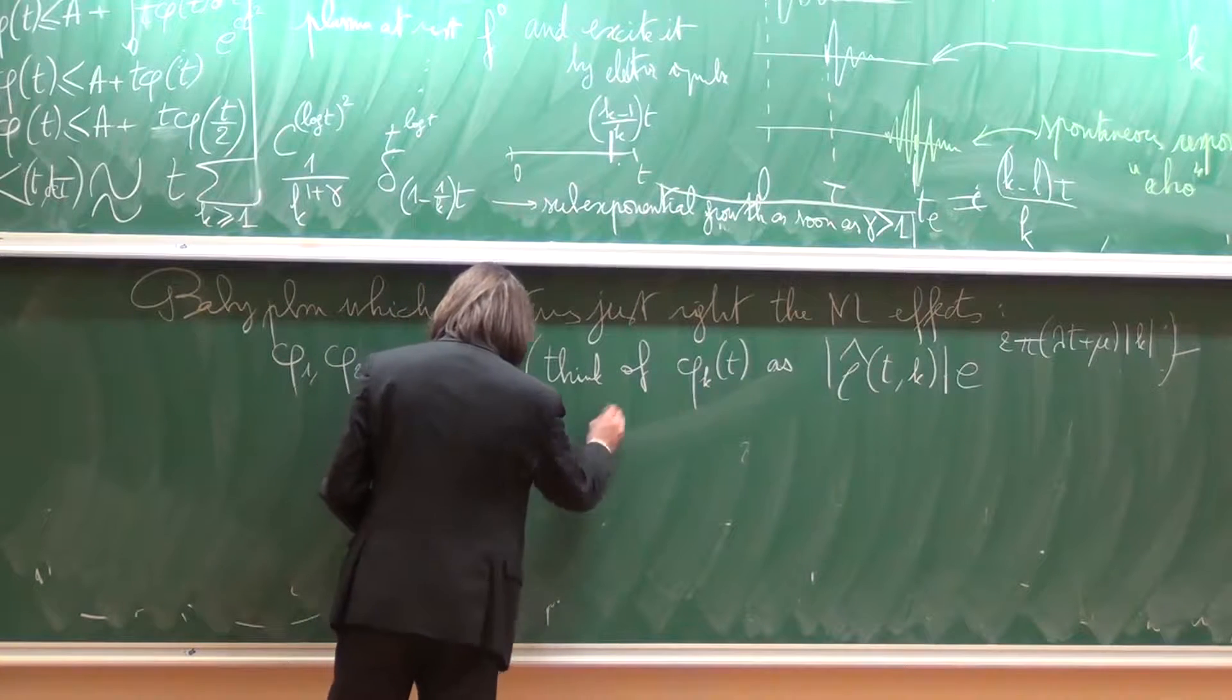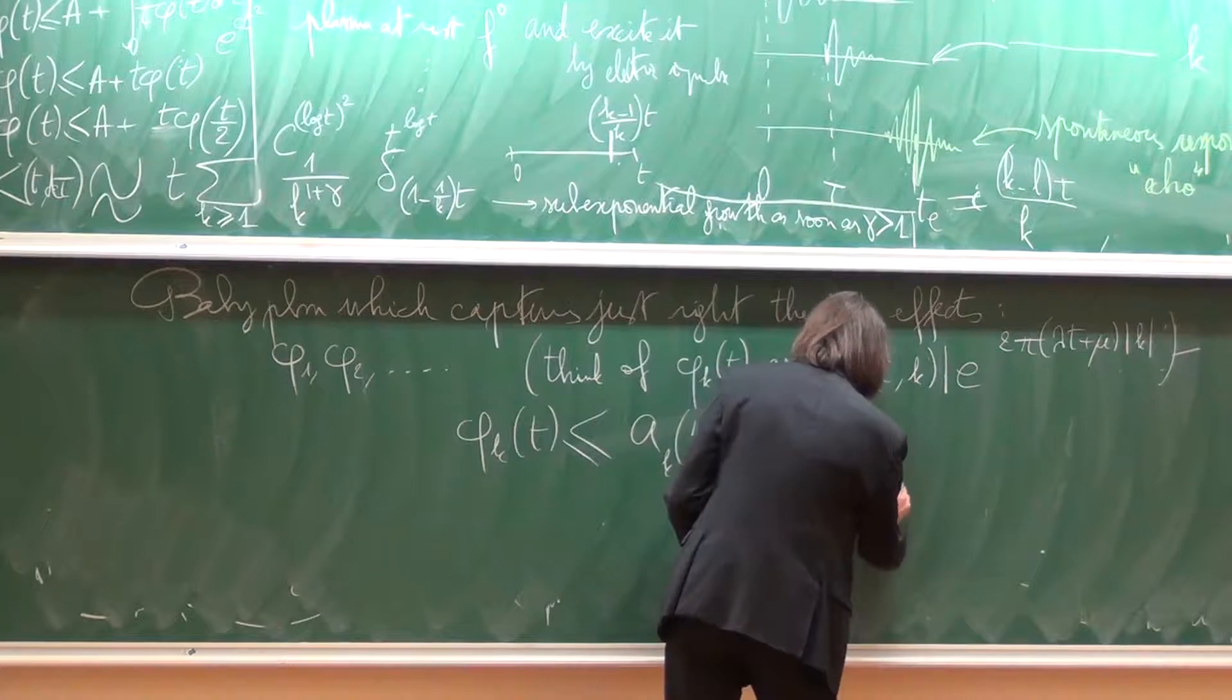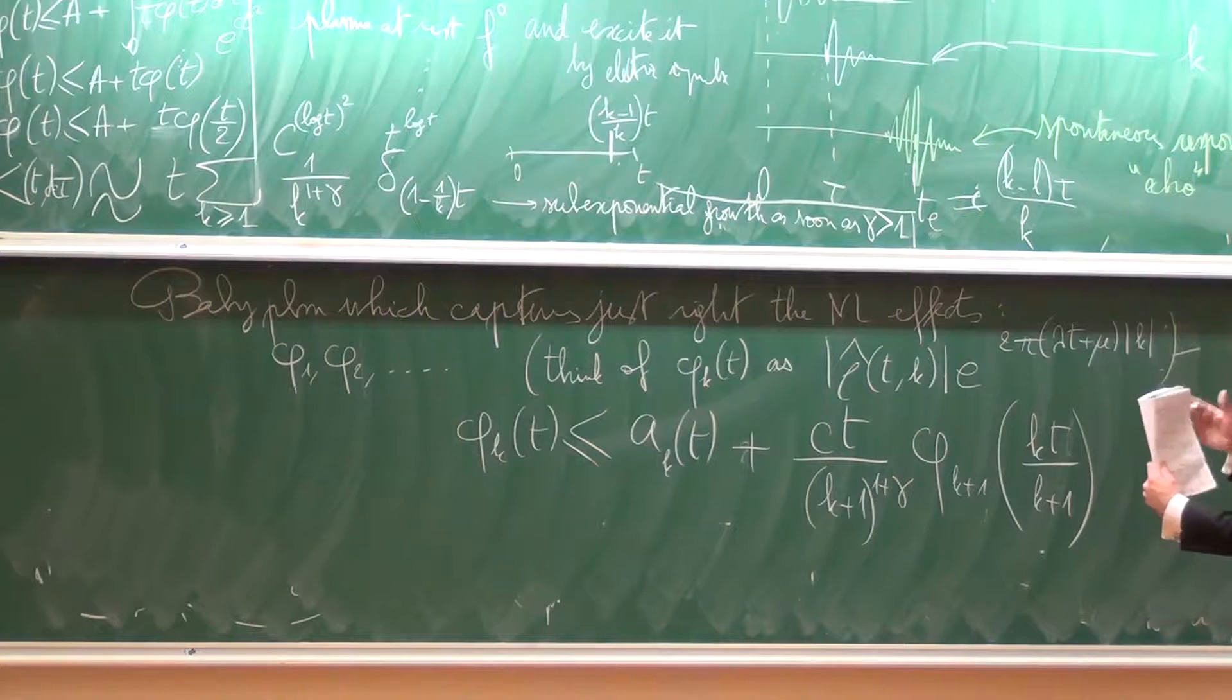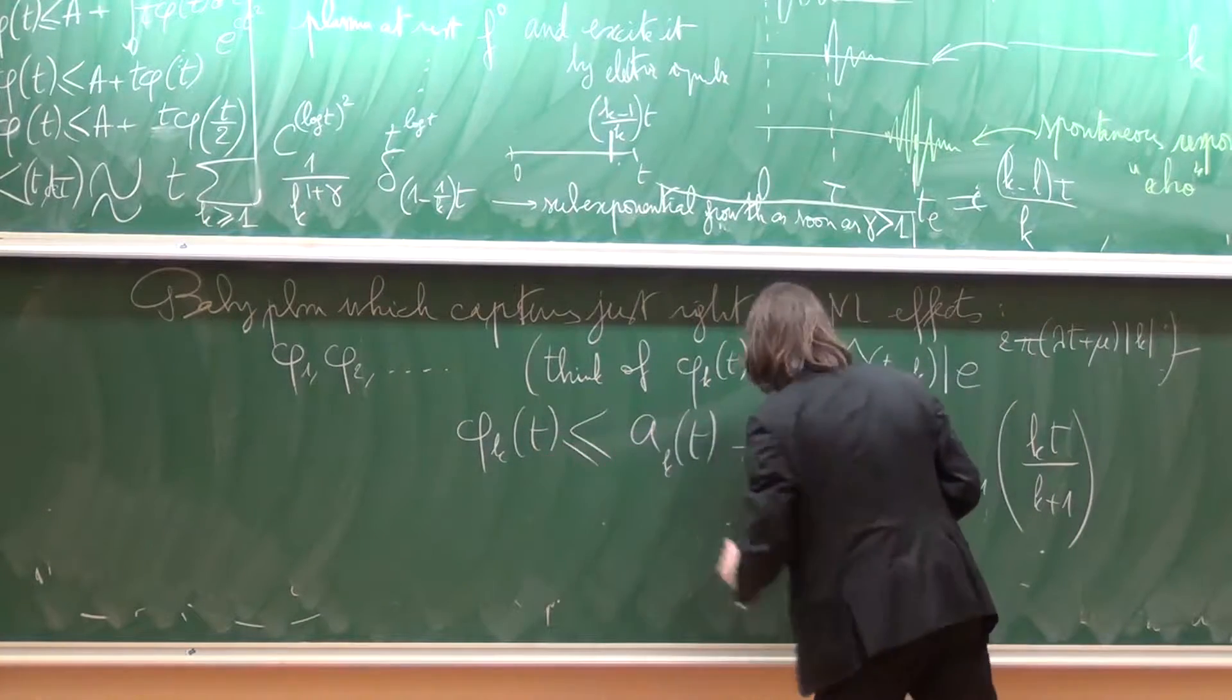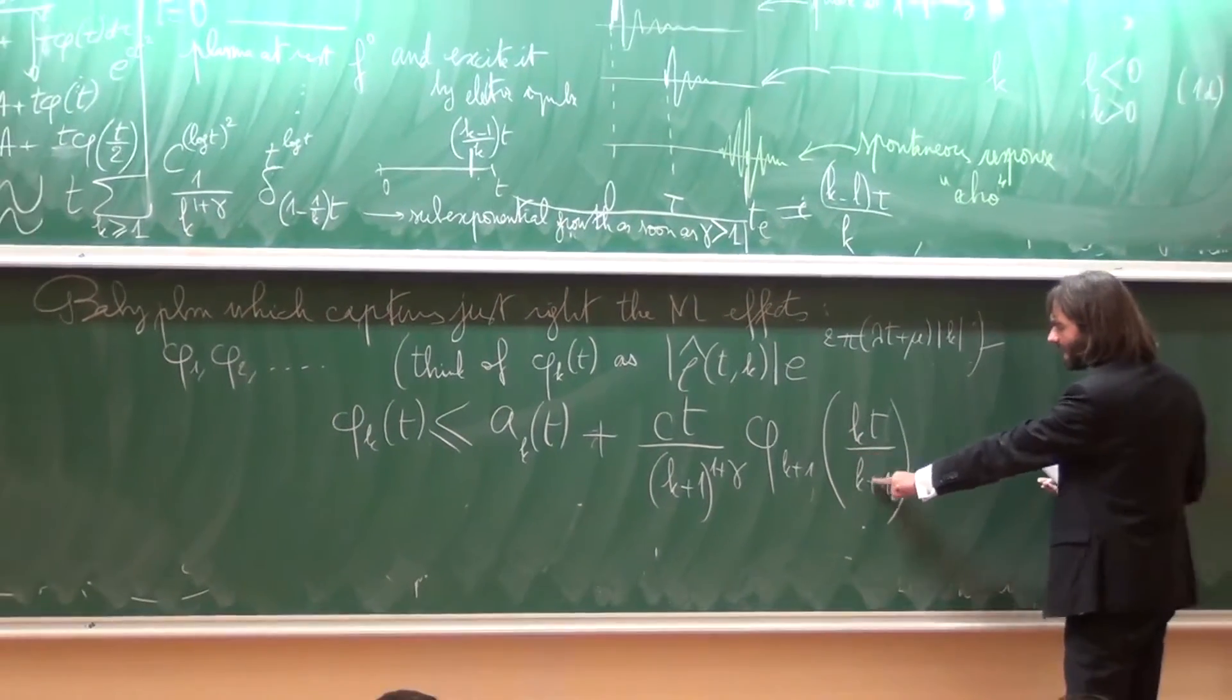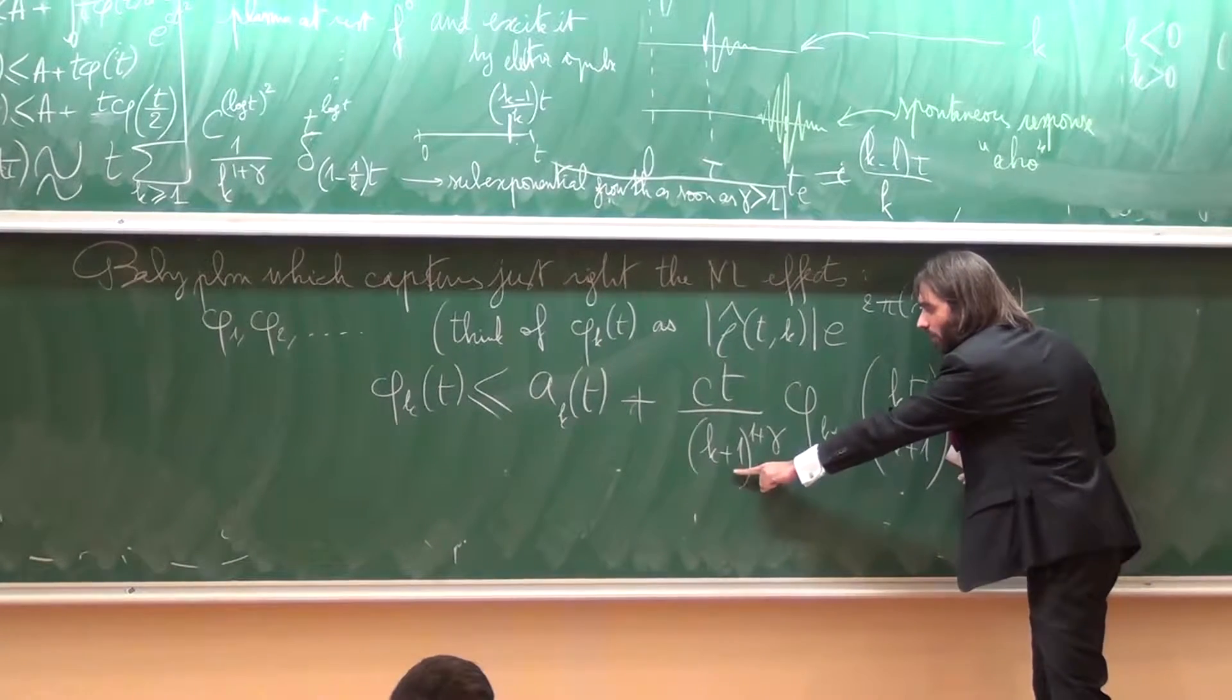And the system would be this: phi k of t is bounded above by some source term, which we control, plus c t divided by k plus 1 to the power 1 plus gamma, times phi k plus 1 of kt divided by k plus 1. So infinite amount of equations. Here, we are looking at the interaction between mode k and mode k plus 1, just keeping this one, which is the strongest. And there is resonance, so what matters most is what happens at time kt over k plus 1, if I want to understand phi at t.